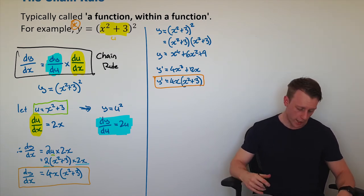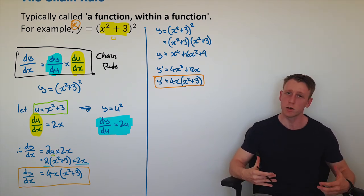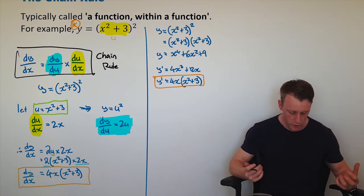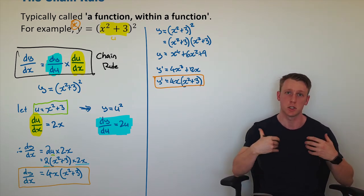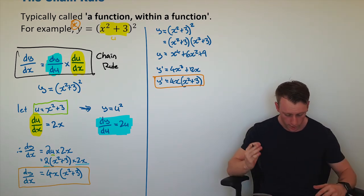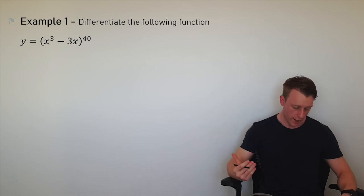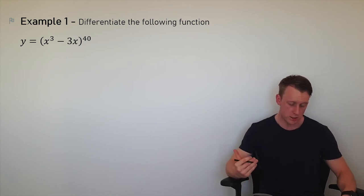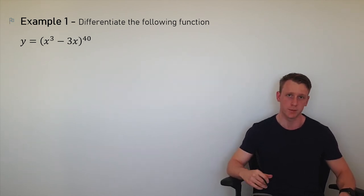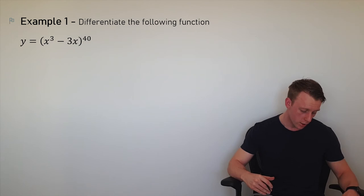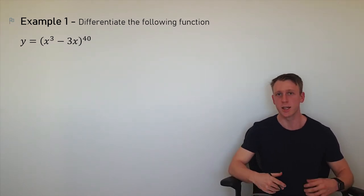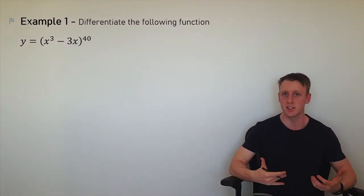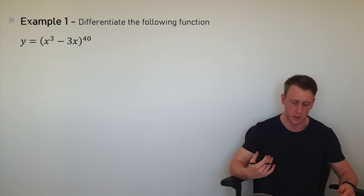You could have done it by expanding, however the chain rule becomes very, very useful when we don't have a function that's just squared. What if I said differentiate y equals (x cubed minus 3x) to the power of 40? You're not going to expand that — it's a lot more efficient and easier to use the chain rule.